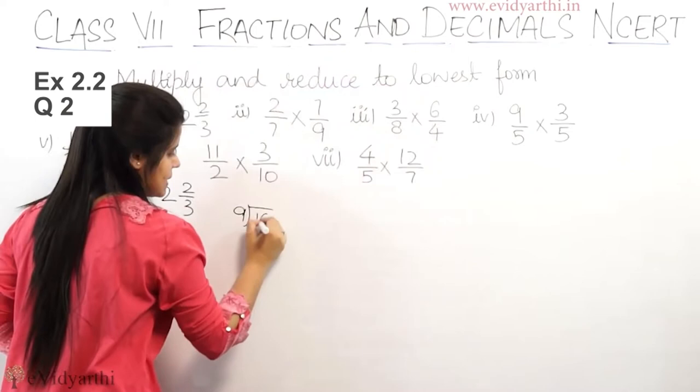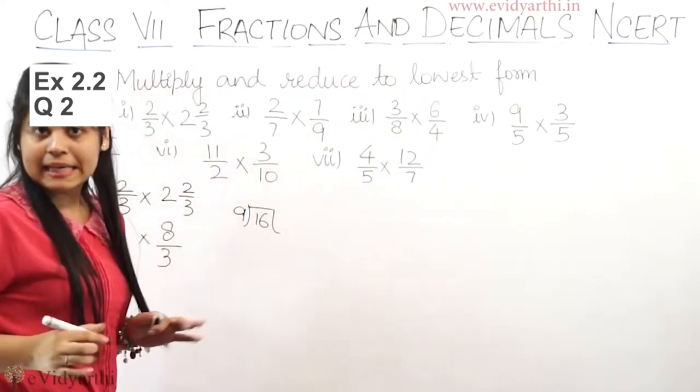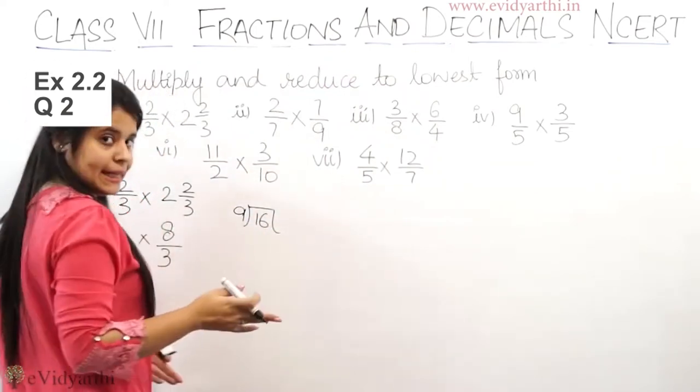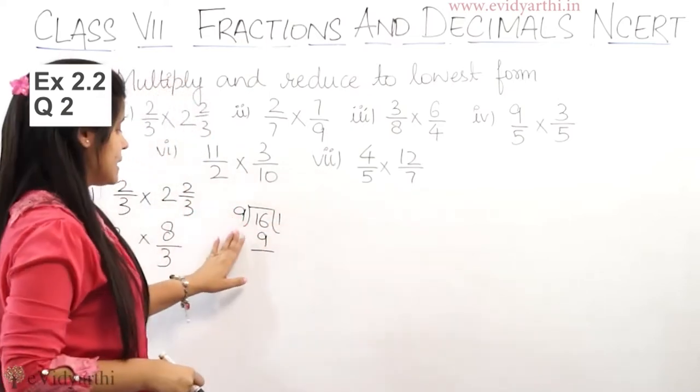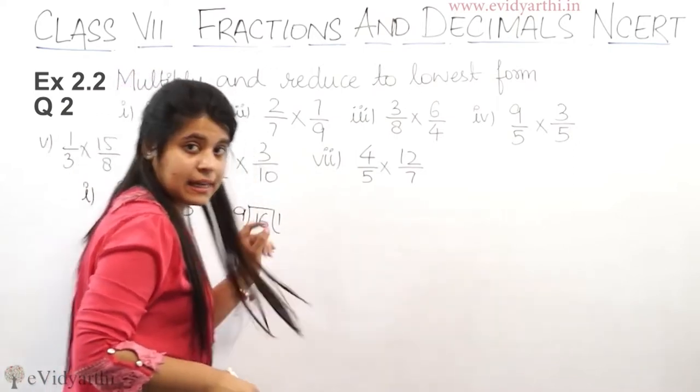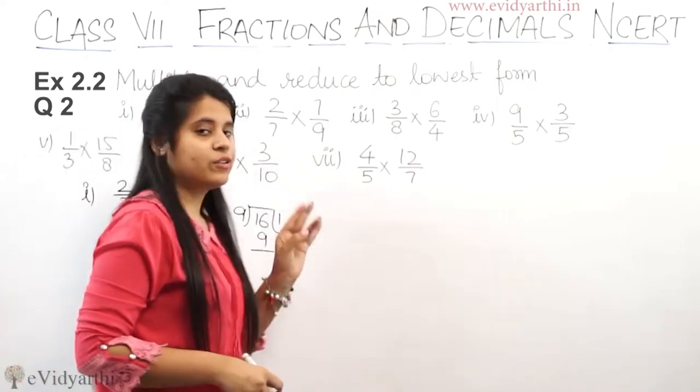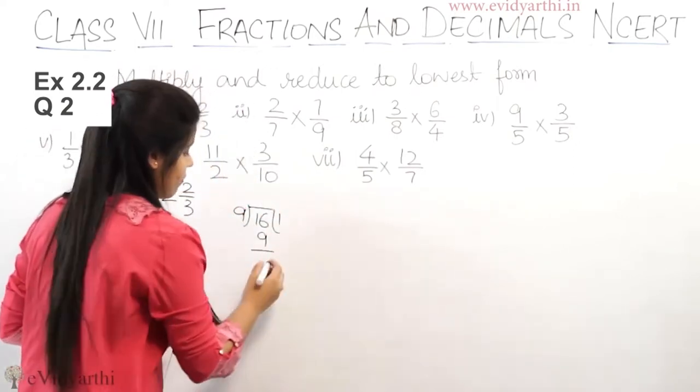9 divided by 16. On table means 16 is not possible. 9 is 2 times is 18. So 9 goes 1 time. 16 minus 9 is 7.